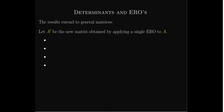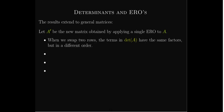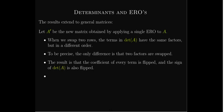We can extend these results to general matrices. We'll call A prime the new matrix obtained by applying a single elementary row operation to A. If we swap two rows, the terms in the determinant of A have the same factors but in a different order — specifically, two factors in each term have swapped positions. The coefficient of every term is flipped, so the sign of the determinant is also flipped. After a swap, the determinant of A prime is the opposite of the determinant of A.